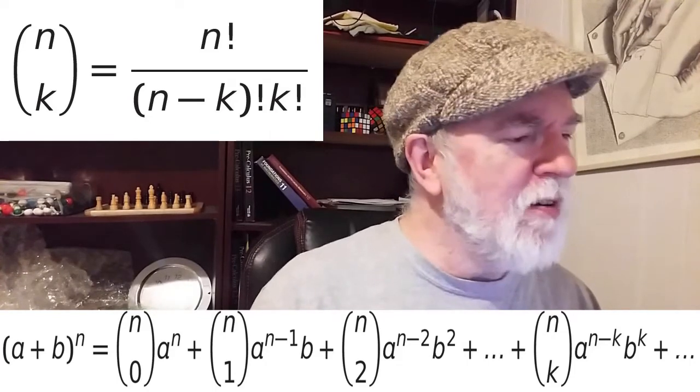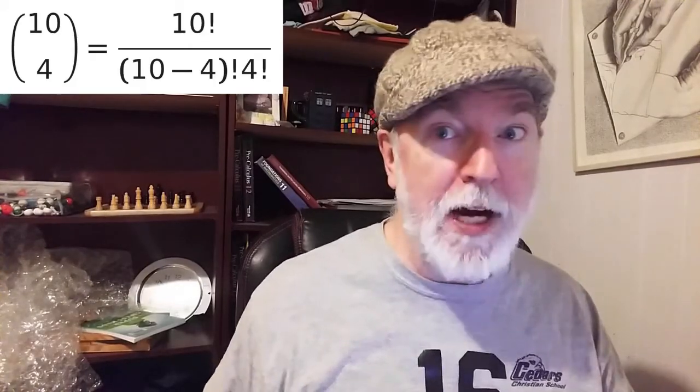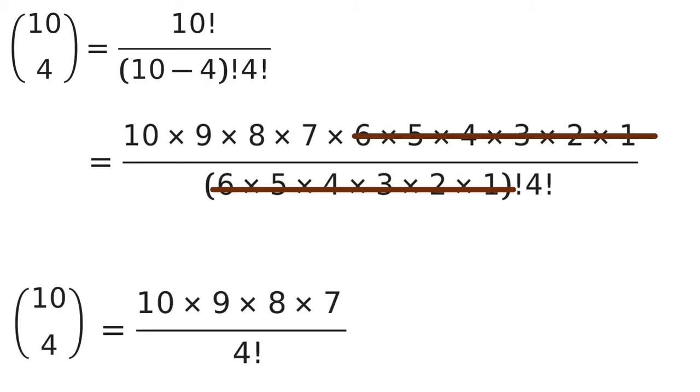So it's best if we look at a specific example. Here's 10 choose 4, which is 10 factorial divided by 10 minus 4 factorial, which is 6 factorial, and then 4 factorial is also in the denominator. When we lay it all out that way so nicely, you can see that the 6 factorial portion of the story cancels out. We keep the 4 factorial in the denominator. In the numerator, we end up with 10 times 10 minus 1 times 10 minus 2 times 10 minus 3.